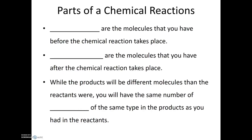Whenever we talk about chemical reactions, the molecules that we have before the chemical reactions take place are known as reactants. Whereas the molecules that are present after the chemical reaction has taken place are called products. While the products will be different molecules than the reactants were, they will have the same number of atoms of the same type in the products as you had in the reactants. So, in a chemical reaction, atoms are not destroyed, atoms are not converted from one to the other. They're simply rearranged into new molecules. That is what a chemical reaction is.